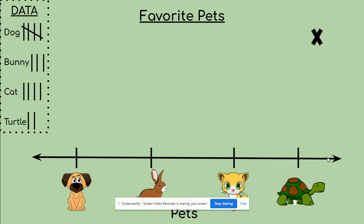I wanted to make this one kind of more kid friendly. So instead of looking at either numbers or words, I decided to show you a picture because this one is called favorite pets. So we asked certain folks what their favorite pet was. And here's all our data that we collected from that particular question. So we are going to work together to fill this line plot according to what we collected in our data.